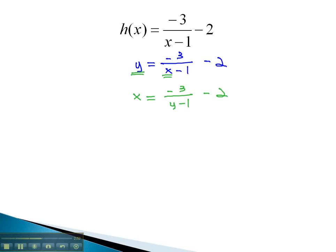We could start by isolating the fraction and adding 2 to both sides, giving us x plus 2 equals negative 3 over y minus 1. Now, to clear the fraction out, we can multiply by that denominator, y minus 1, on both sides.